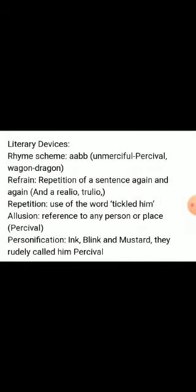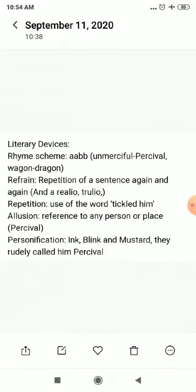Literary devices: the rhyme scheme is again A-A-B-B. Refrain is used — the repetition of the phrase 'and a realio-trulio'. Repetition is present through the use of the phrase 'tickled him'. Allusion is also used — allusion is a reference to any person or place. Here, the reference to Percival is an allusion.